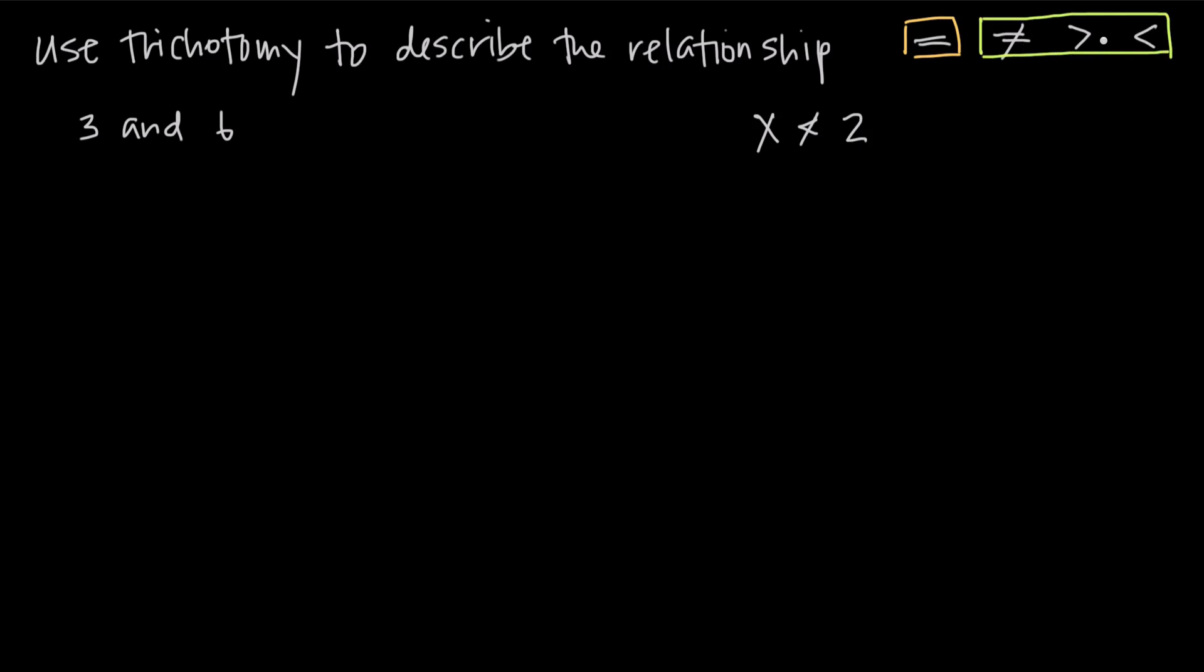And it's these three relationships that we call the trichotomy. When we want to describe, for example, the relationship between the values three and six, how can we describe the relationship between these two numbers?